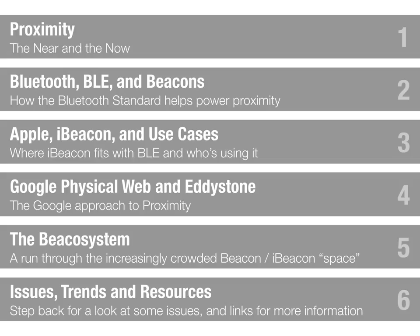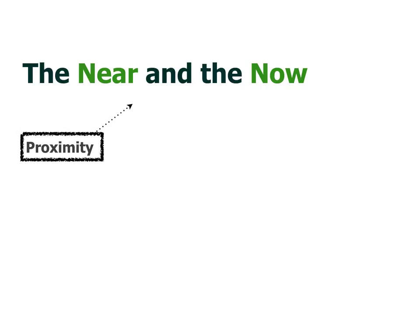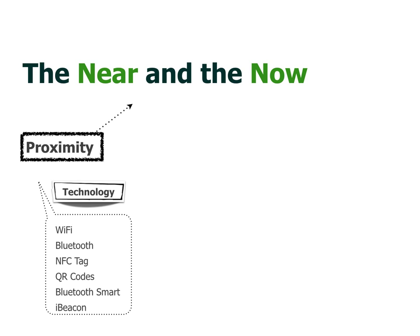So let's get started. By proximity, we mean anything that might tell us or give us a signal that someone — and in particular a device they are carrying — is near to something else of interest. There are a bunch of different technologies we can use to do that. Let's leave aside GPS for now. There are actually a bunch of other technologies used primarily for proximity purposes, including Wi-Fi, NFC, or even a QR code.